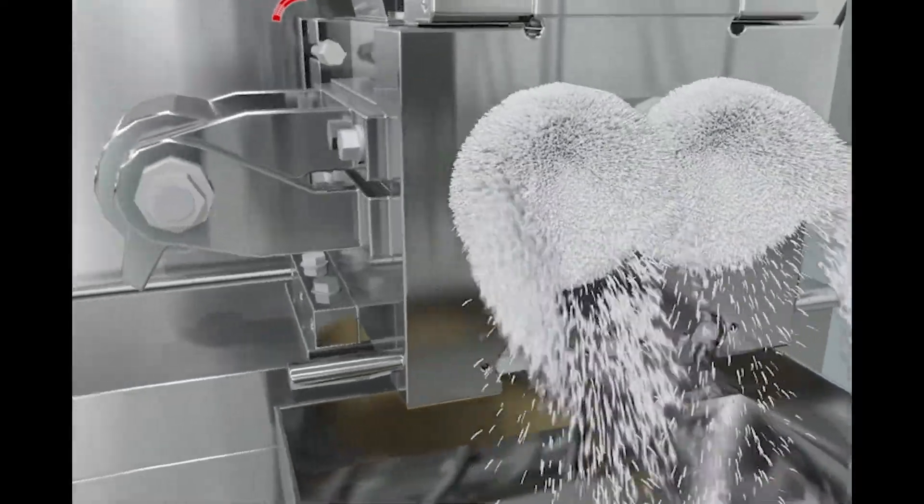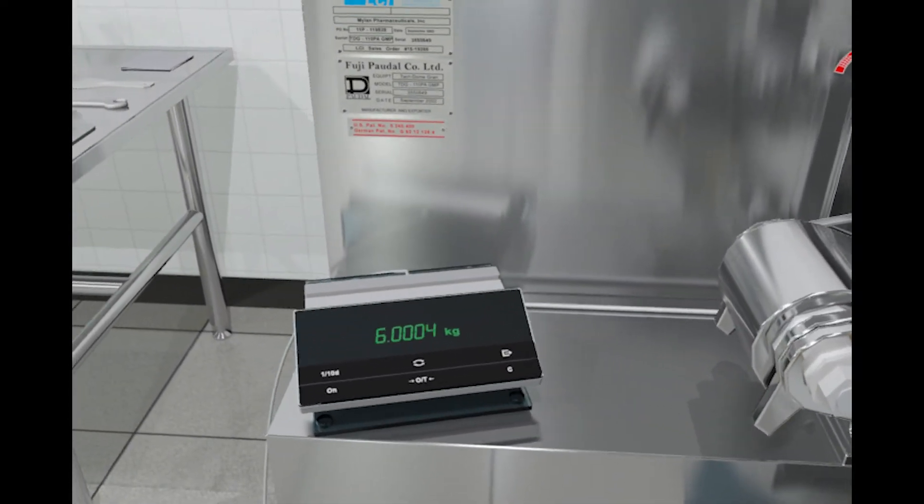Once the specified weight of material has been extruded, the segments, also known as pellets, are ready to be fed into the twin bowl spheronizer.